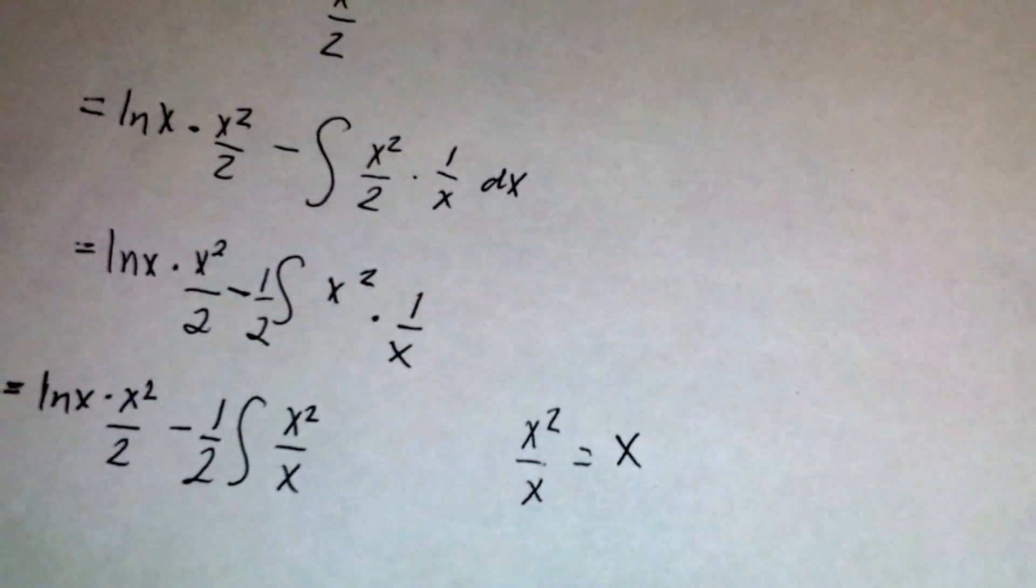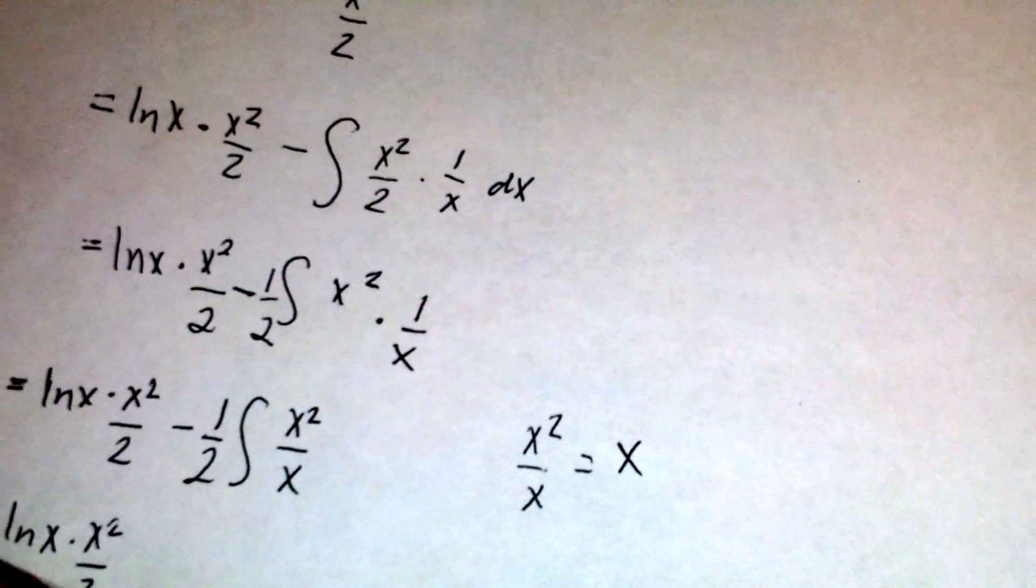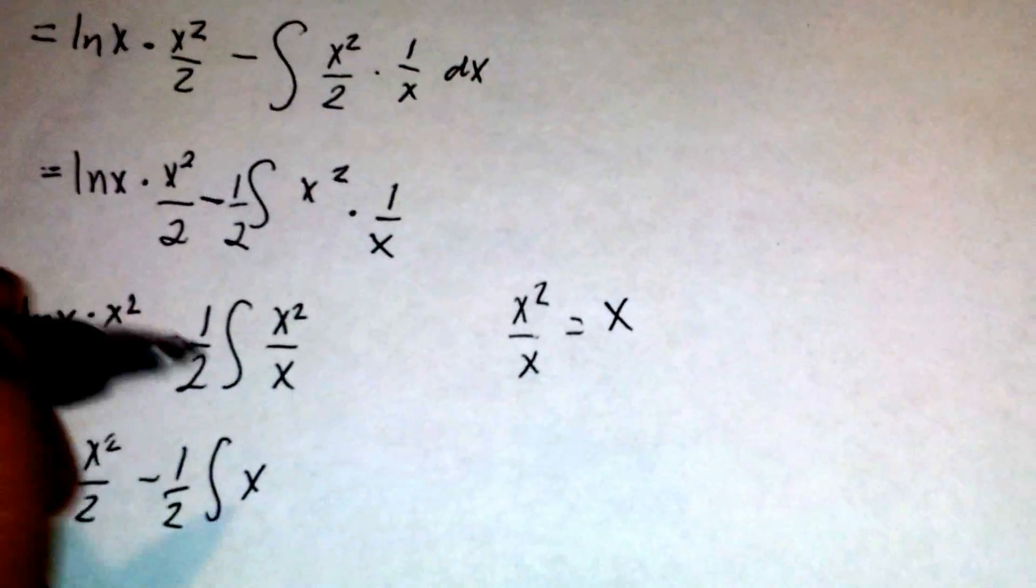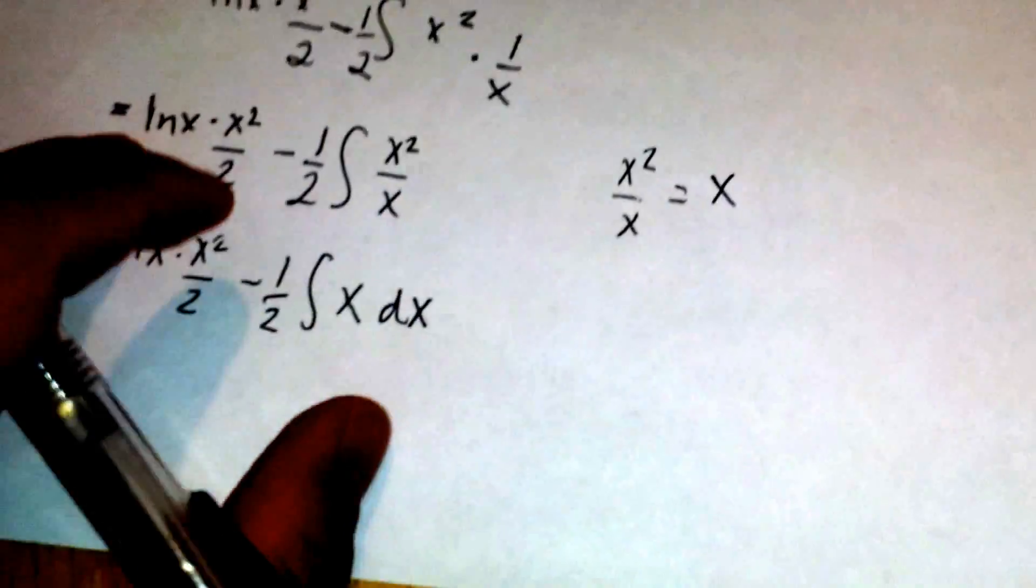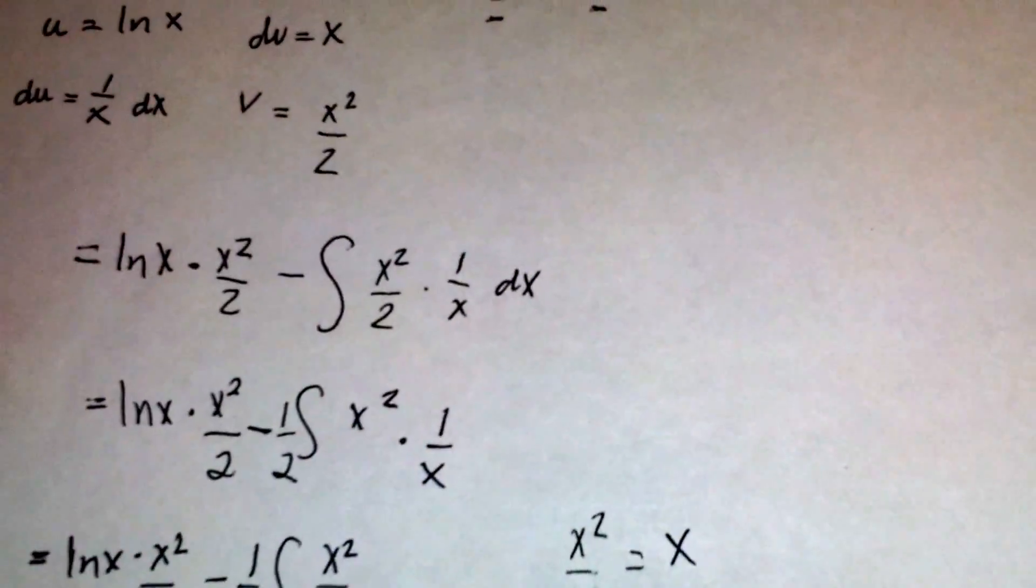So we end up with ln x times x squared over 2 minus 1 half the integral of x. Now taking the integral of x is pretty easy, and we did that earlier as you can see.